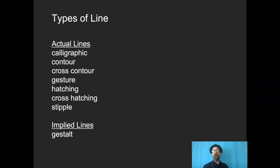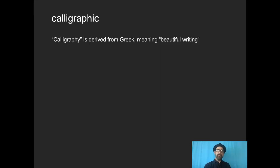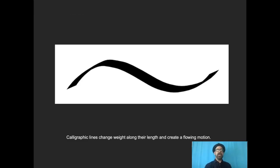Types of line. There are actual lines, plenty of actual lines. And then there are implied lines. Suggestion of line. Gestalt lines, psychological lines. More about those in a minute. So let's take a look at some actual lines. Calligraphic lines are those that kind of change weight along their length.